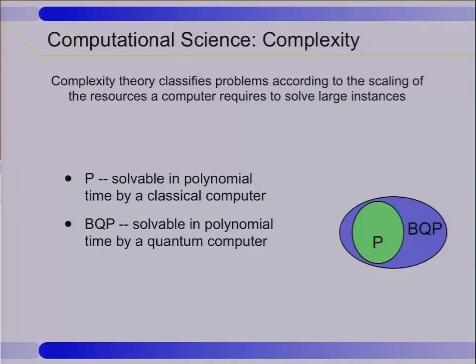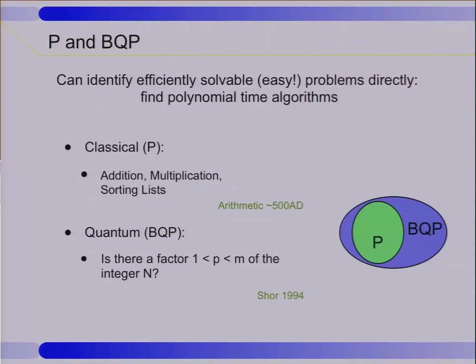There is the corresponding class of quantum problems which are in a class BQP standing for bounded quantum polynomial. It's the class of problems that we can solve efficiently or easily in polynomial time on a quantum computer. You're actually very familiar with lots of problems in both of these classes. Some of the problems in the class P are the ones that you utilize every day. They're arithmetic, basic addition, subtraction, sorting lists. These are all things that your computer can, in principle, do efficiently.